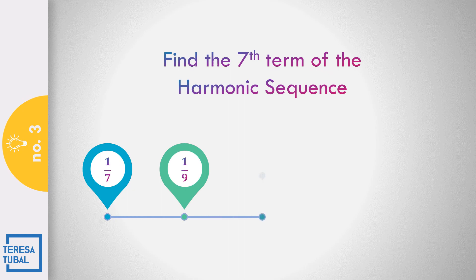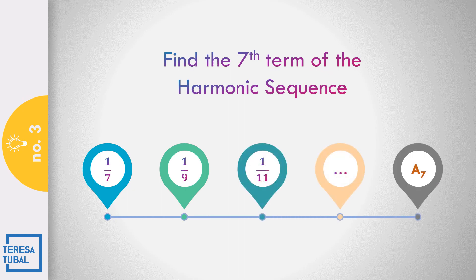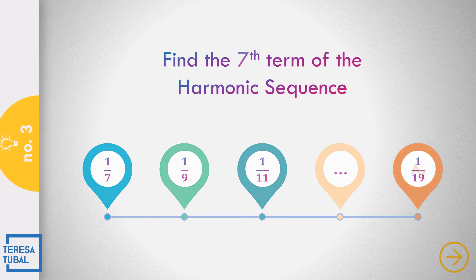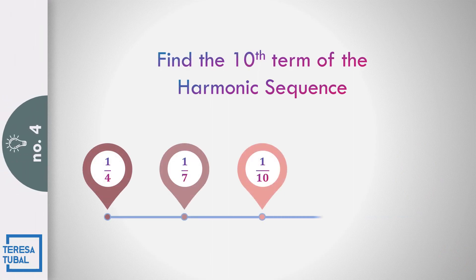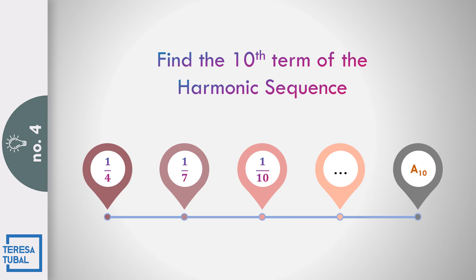Question number 3: Find the seventh term of the harmonic sequence 1/7, 1/9, and 1/11. Correct — the answer is equal to 1/19. Question number 4: Find the tenth term of the harmonic sequence 1/4, 1/7, and 1/10. Correct — the answer is equal to 1/31.